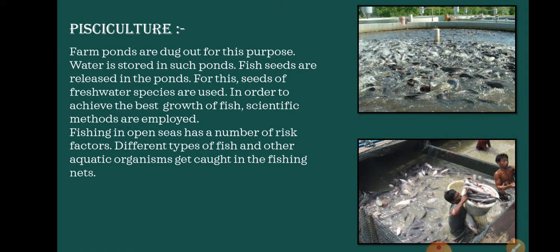Then comes pisciculture, which is also called fish farming. Farm ponds are dug out for this purpose. Water is stored in such ponds and fish seeds are released in them. Seeds of freshwater species are used. In order to achieve the best growth of fish, scientific methods are used today. This is also a high-income occupation. We find fish like rohu, catla, and common carp, etc.